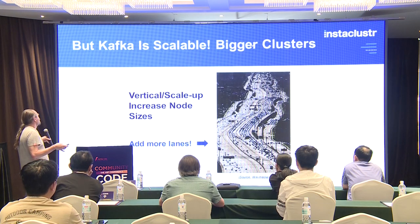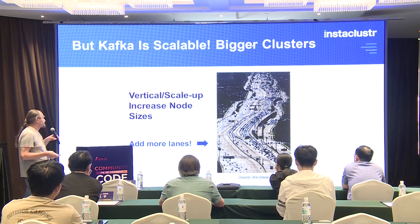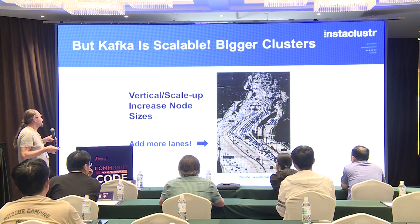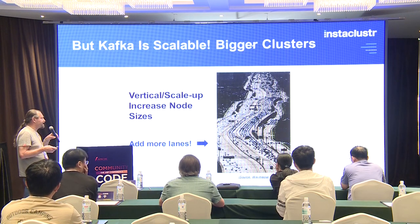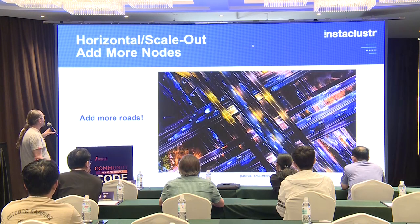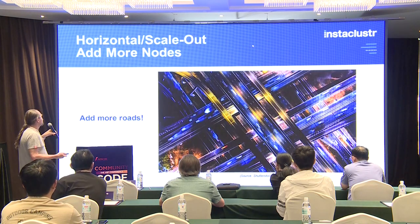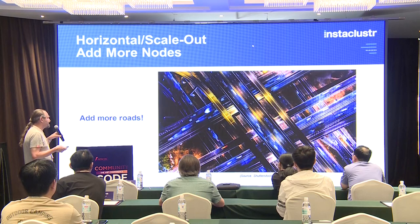In theory, Kafka is still scalable. There are two options: vertical scale-up, where you increase node sizes — like adding more lanes to your highway — and horizontal scalability, the more common approach, where you scale out the cluster by adding more nodes, which is like adding more roads to your transportation system.